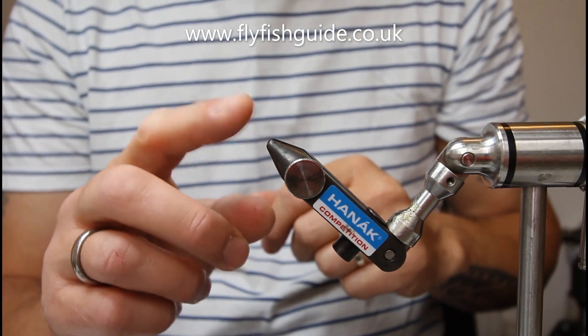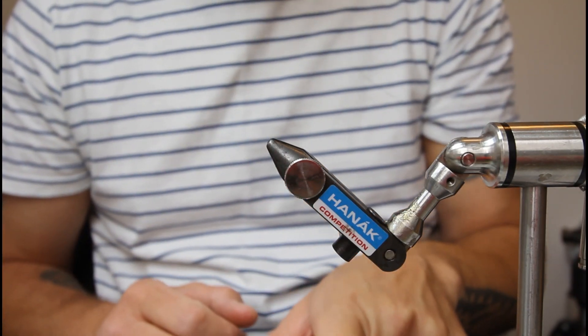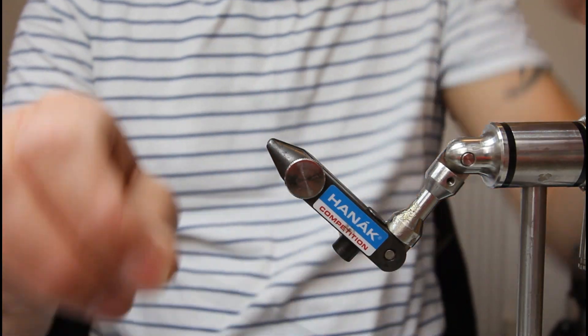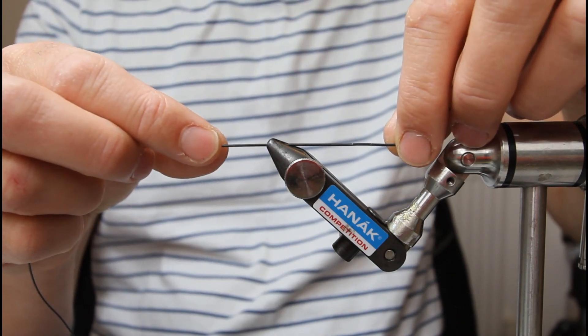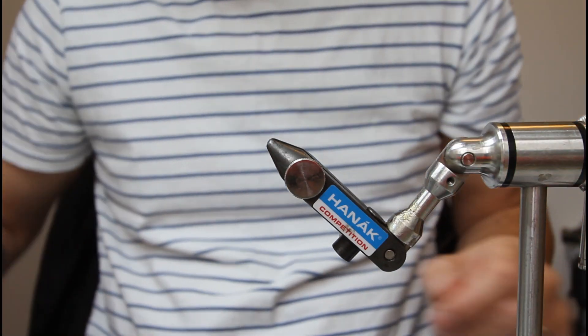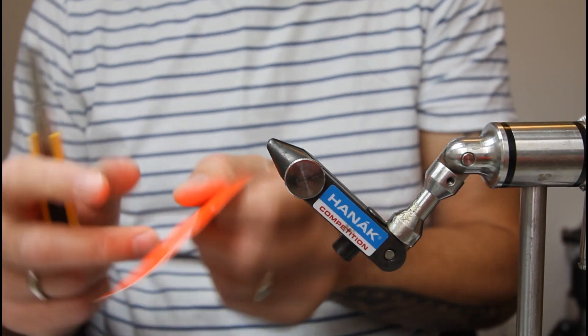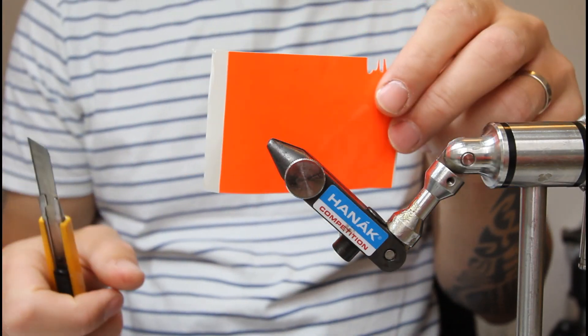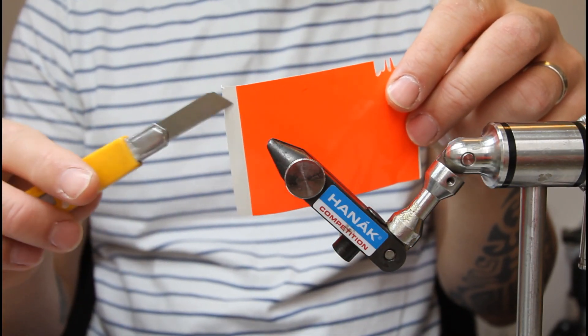What I do is get the jaws of your vise as loose as you can, because I'm going to put my fly line in and secure it. It just makes things a lot easier. I've taken my craft knife and cut a little quarter inch strip off as you can see.